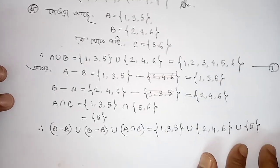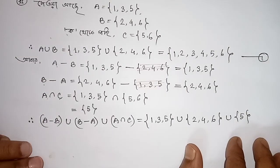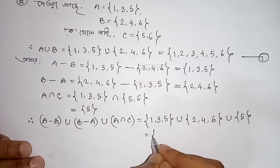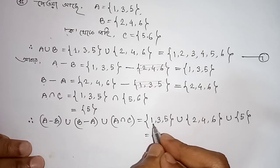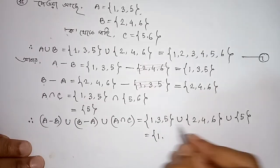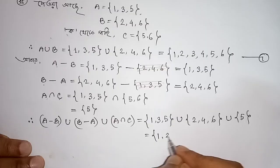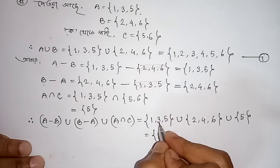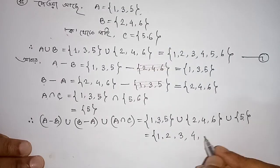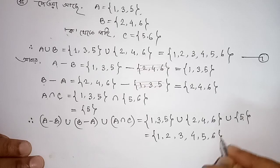Union meaning: where we meet. Where we meet, we meet. So see: 1, 2, 3, 4, 5, 6.